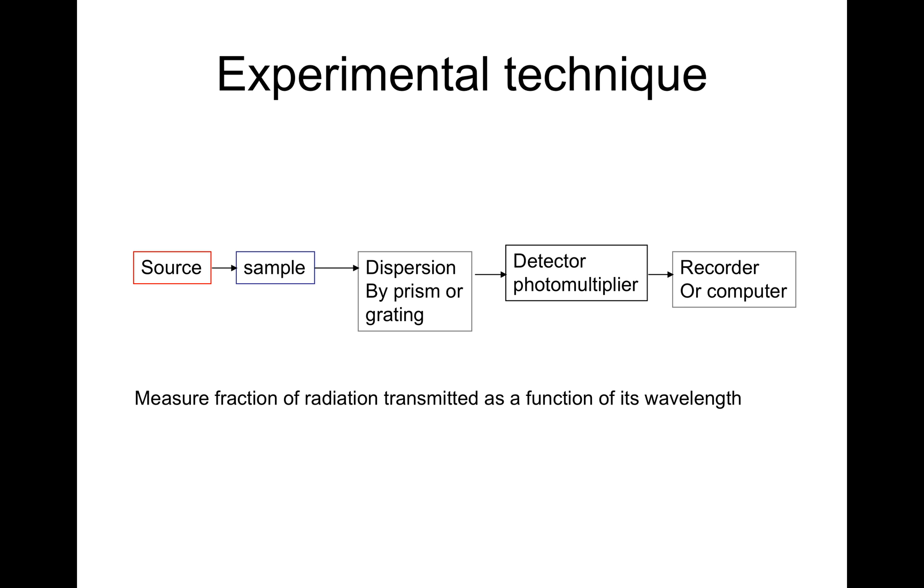Here is a schematic outline of a typical experimental setup. We have the source which produces the radiation. The radiation strikes the sample, then goes to the dispersion prism or grating which separates the colors or wavelengths. These then go to the detector or photomultiplier where they are amplified. The detected information is then taken to a recorder or computer.